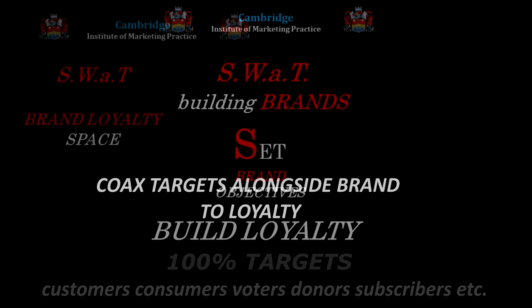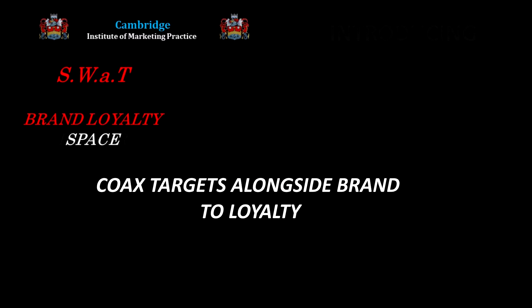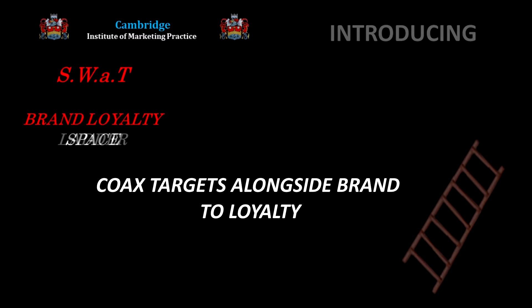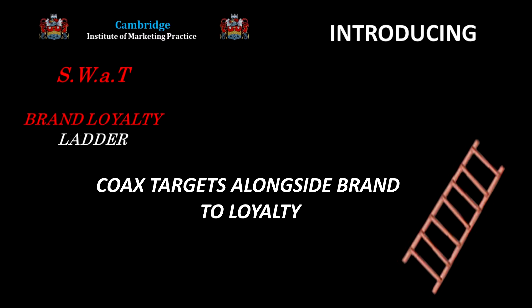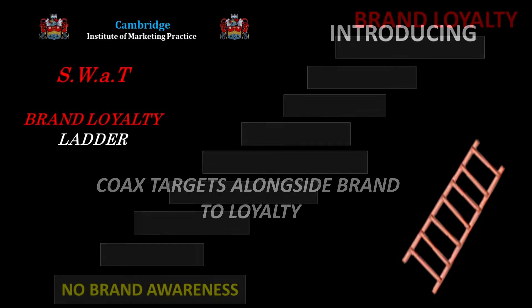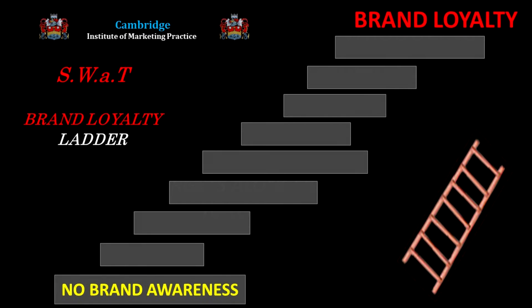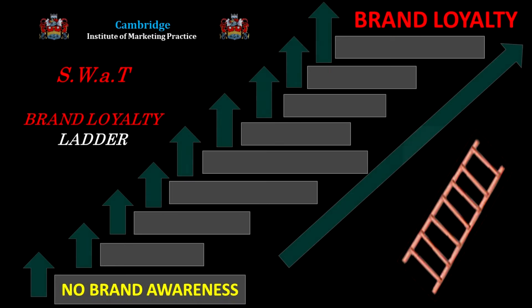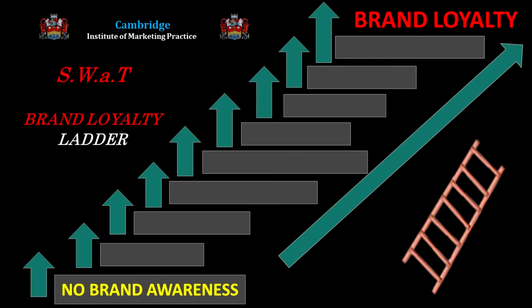But we can get there in stages. We can coax individual targets up a ladder through their loyalty space — a ladder which each individual must climb, rung by rung, alongside our brand on their journey towards absolute loyalty. We can identify at what point on the loyalty ladder our targets have arrived, set objectives for their next port of call, and track the progress of our targets through the loyalty space.